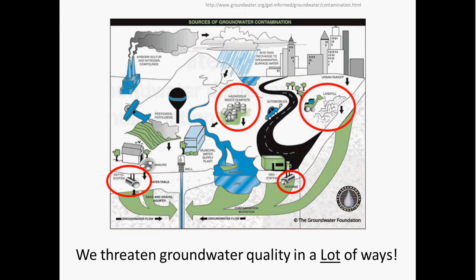Landfills are places where garbage is taken to be buried. Nowadays they're supposed to have a protective liner that prevents any contaminants from getting out. However, that liner could become damaged, or some of the older landfills don't have liners at all, and leachate from these landfills can make its way into the subsurface and contaminate groundwater.